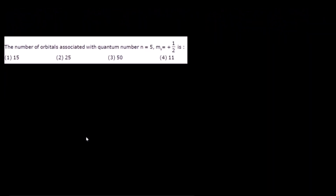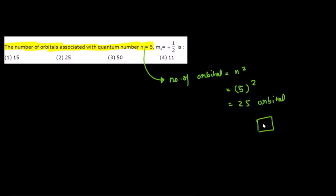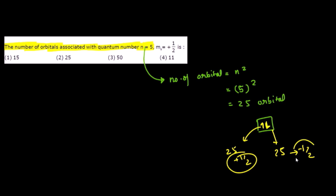The next question: how many orbitals are associated with quantum number n = 5 having spin quantum number +1/2? The number of orbitals for principal quantum number n is n² = 5² = 25 orbitals. Each orbital holds 2 electrons — one with spin +1/2 and one with spin −1/2. So among the 50 electrons possible, 25 have spin +1/2. Answer: 25.